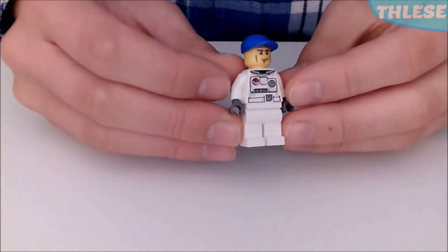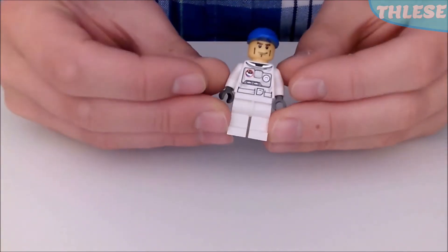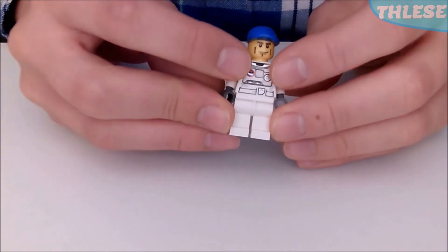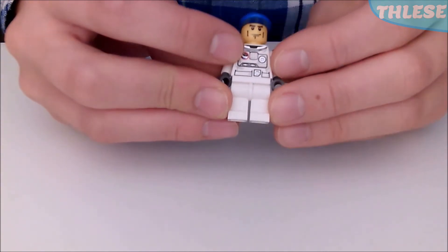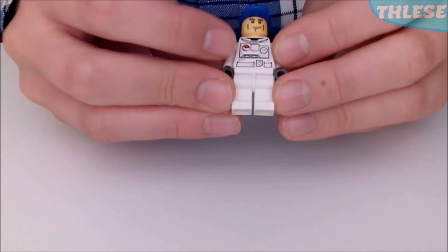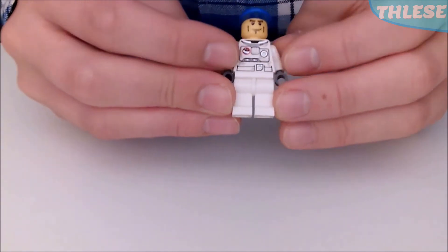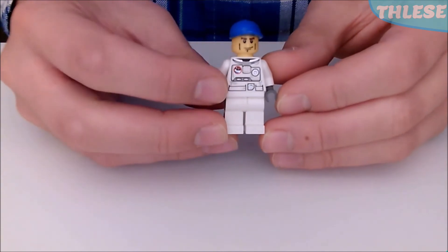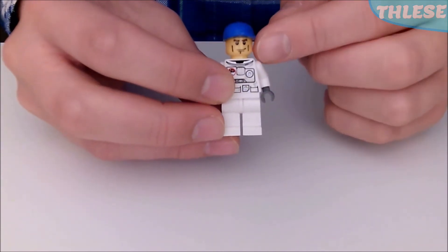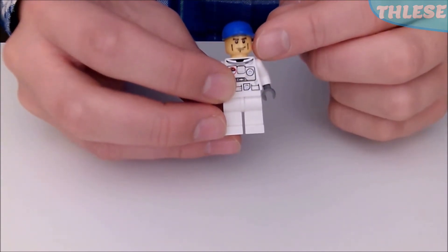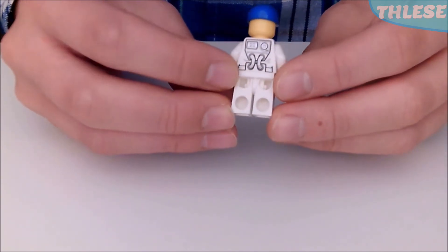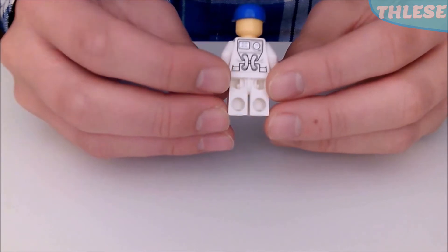This set comes with one minifigure, the Spaceman with a white space suit, the space logo on his front, and lots of hardware because space suits have a lot of hardware. He has a blue hat, a nice plain face with a beard, and some tubes at the back showing that it is air sealed.